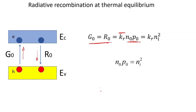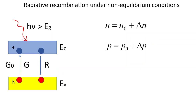In different literature sources you may see different notations for this coefficient—sometimes gamma, sometimes Kr. We put the index r to highlight that this is radiative recombination. We can also write the product of equilibrium hole and electron concentrations in terms of ni-squared, the intrinsic charge carrier concentration.